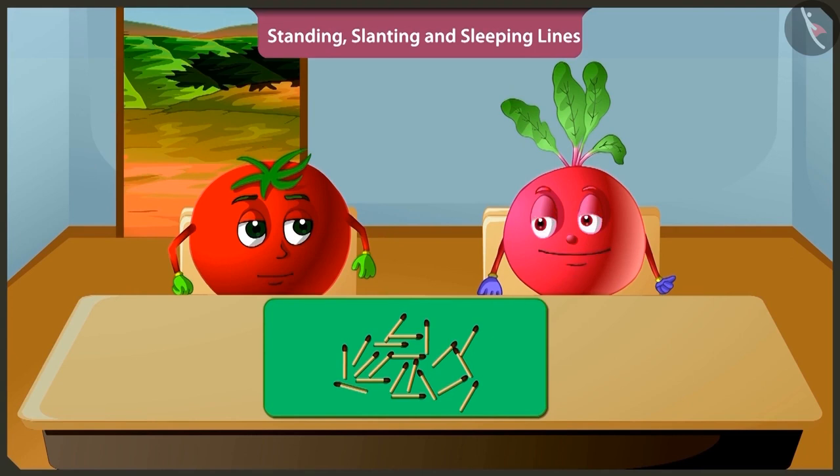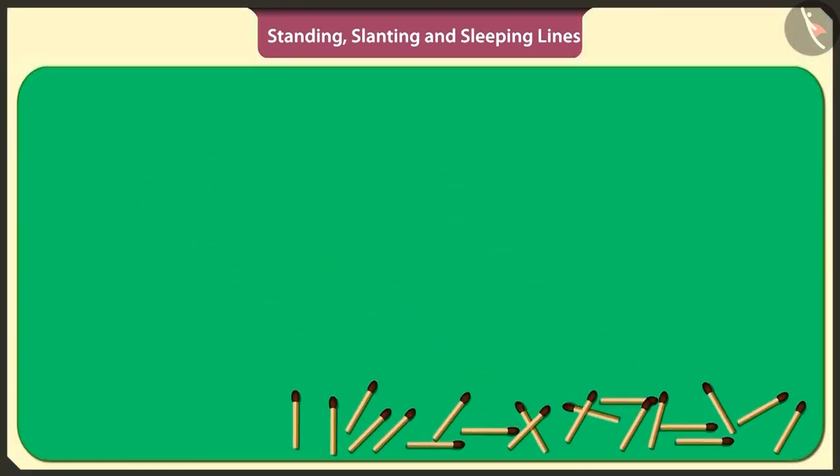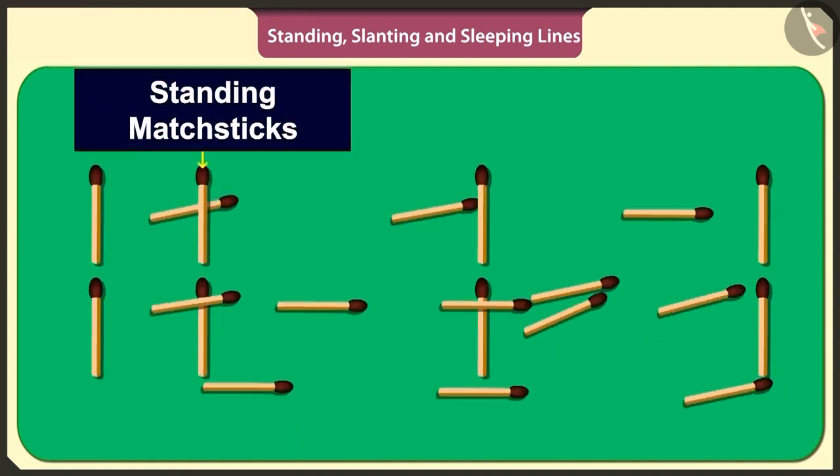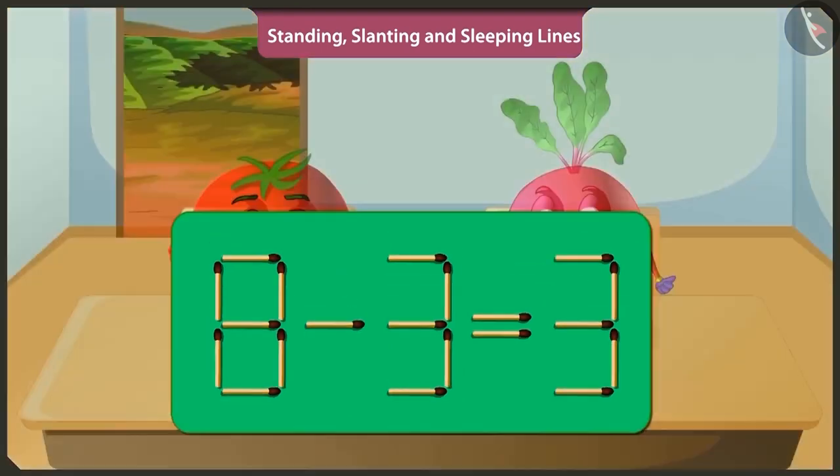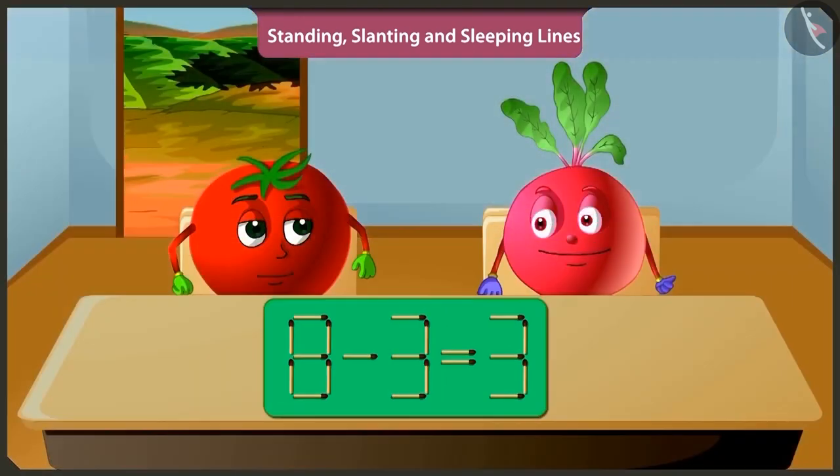Okay, Tingu. See, I will arrange these matchsticks in standing and sleeping lines to make a puzzle. Hey, but this puzzle is wrong. If we subtract three from eight, then we get five. This is the puzzle. You have to remove any one matchstick and place it again in such a way that it solves the puzzle.